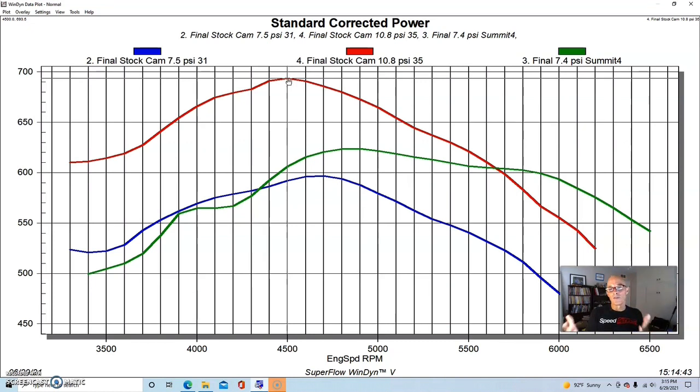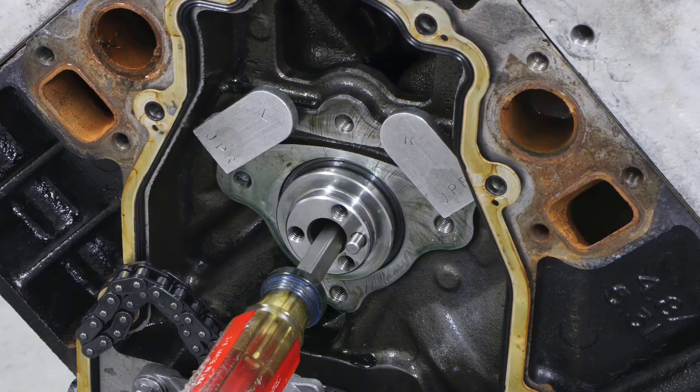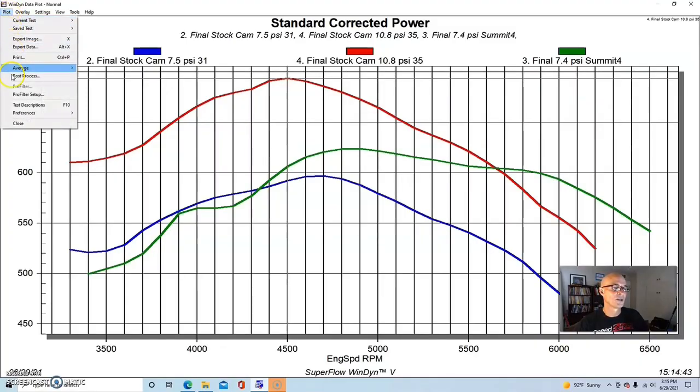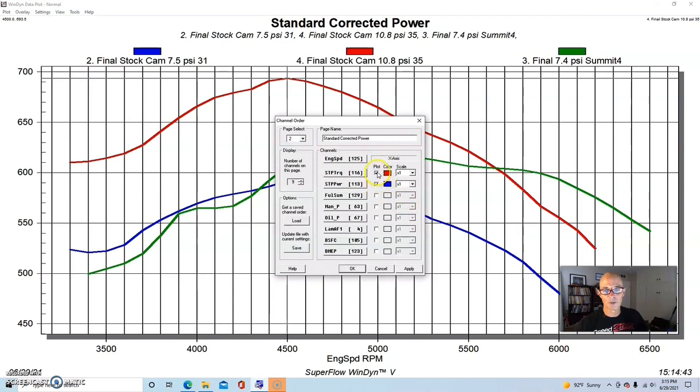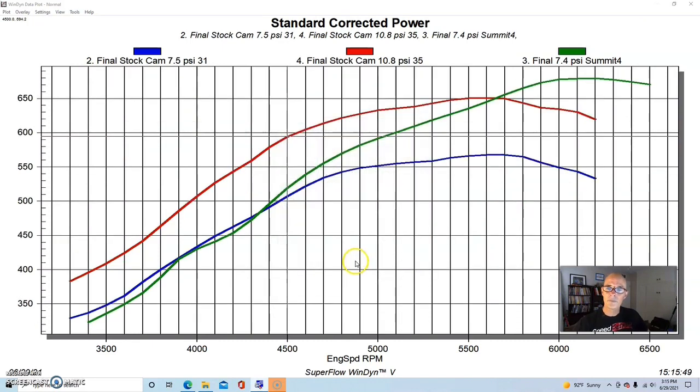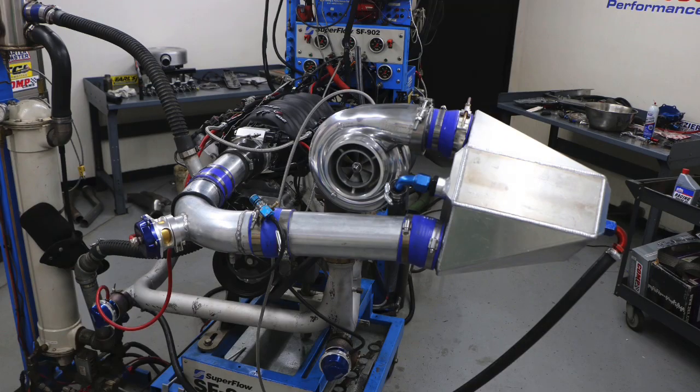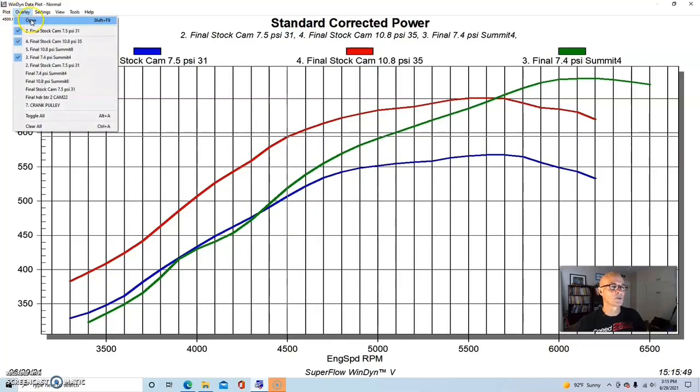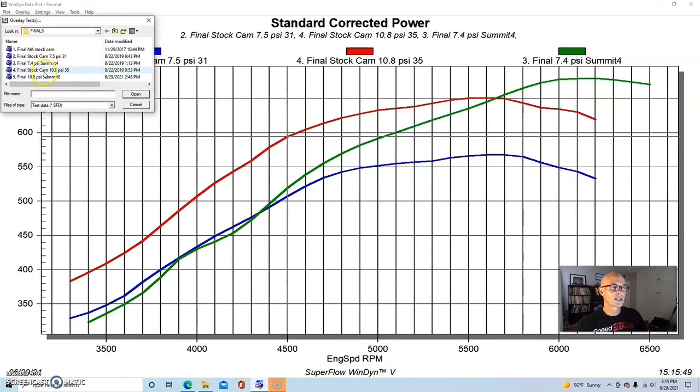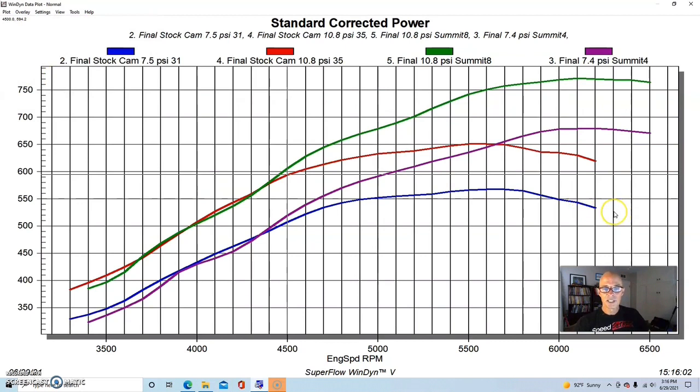All the people that have run cams in their turbo LS's, which is a good way to go, what happens if we then just add boost to our cam LS? And here's what happens when we do that. So we ran our cammed version with the Summit Pro LS cam at 10.8 pounds, and you can see it did exactly what we would expect. It made a lot more power. As a matter of fact, it made the most amount of power, 771 horsepower.